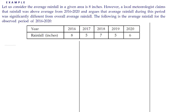This example is taken from the CBC handbook. It says let us consider the average rainfall in a given area is 8 inches. However, a local meteorologist claims that rainfall was above average for 2016 to 2020 and argues that average rainfall during this period was significantly different from the overall average rainfall. The average rainfall for the years 2016 to 2020 is given, and this is an example of a sampling distribution.